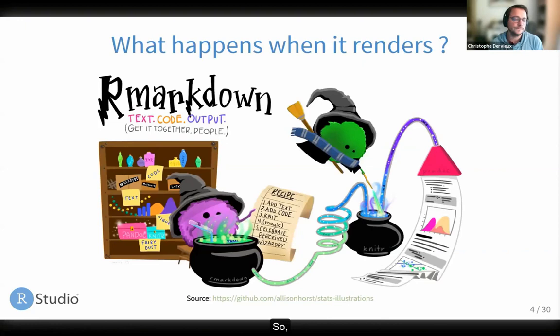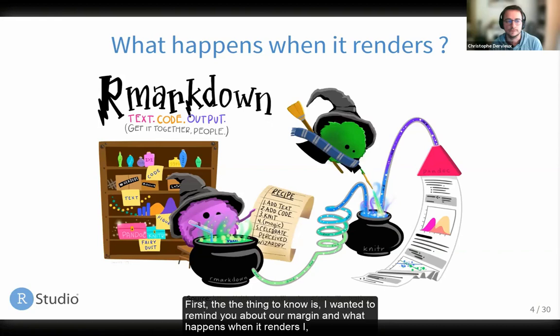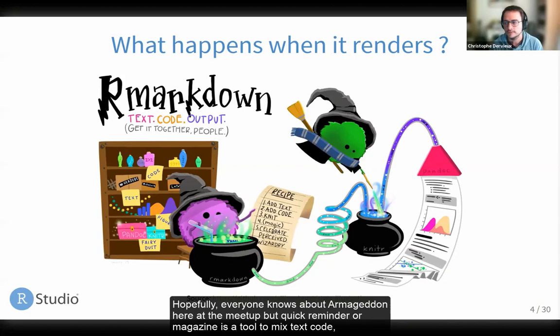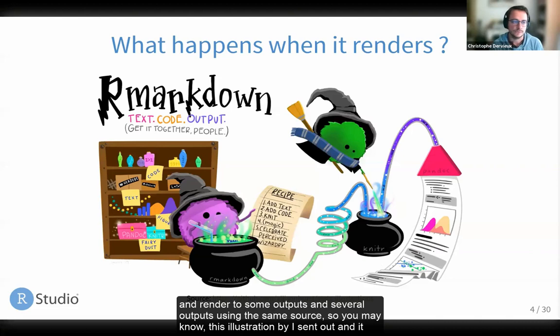The first thing to know — I wanted to remind you about R Markdown and what happens when it renders. Hopefully everyone knows about R Markdown here at the meetup, but a quick reminder: R Markdown is a tool to mix text, code, and render to some outputs — several outputs using the same source. You may know this illustration by Alison Horst, and it illustrates the way that sometimes R Markdown can appear like magic.